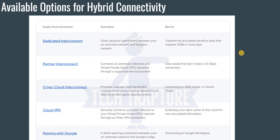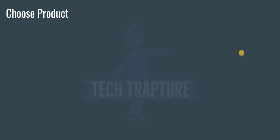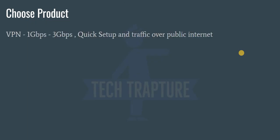When should you use Cloud VPN versus Interconnect? If your required bandwidth is very low — 1 Gbps to 3 Gbps — and you need a quick setup, you can use VPN. With VPN, traffic flows from your Google Cloud network to your on-premises network through an encrypted tunnel over the public internet. That's one important thing to remember: when using VPN, your traffic travels over the internet.